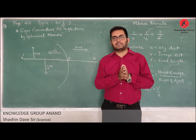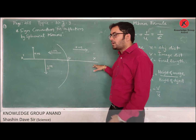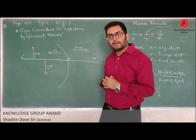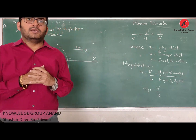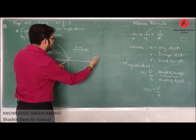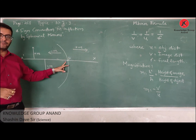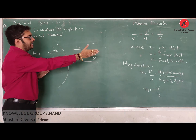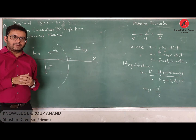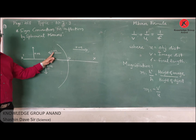In this sign convention system, the principal axis is considered as the x-axis, and all distances, whether on the left-hand side or right-hand side, are measured from pole P. All distances on the right-hand side of pole P are considered to be positive.